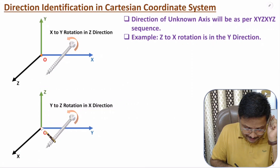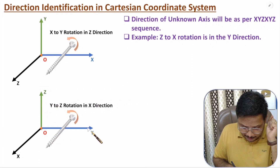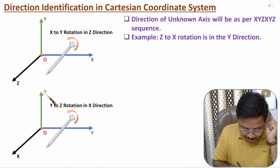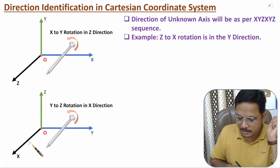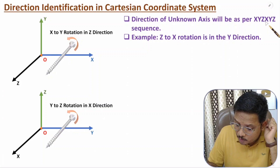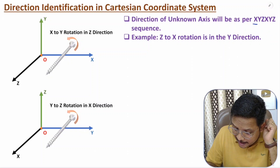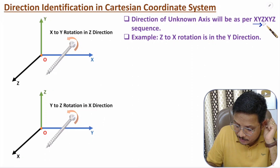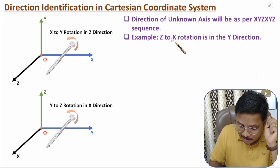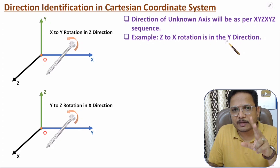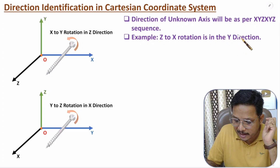If you have axis Z and axis Y, you need to rotate the screw from Y to Z. If you rotate the screw from Y to Z, you will be moving towards the X direction. The sequence of rotation should be X, Y, Z, X, Y, Z. If you rotate from X to Y, you move on Z; if you rotate from Z to X, you move towards Y. We usually need to identify the positive axis direction, that is why we use this sequence.